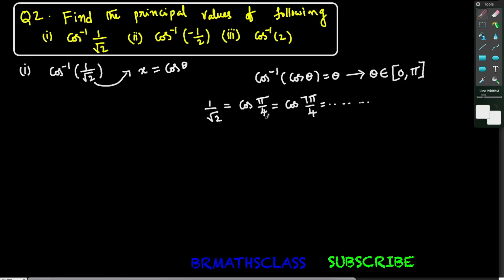Which one do we need to choose? Pi by 4 means 45 degrees. Is 45 degrees in the closed interval 0 to pi, that is between 0 and 180? Yes, pi by 4 is there. Now 7 pi by 4: pi by 4 is 45, so 7 into 45 is 315 degrees. 315 degrees is not between 0 and pi, so that's why we don't prefer cos 7 pi by 4.